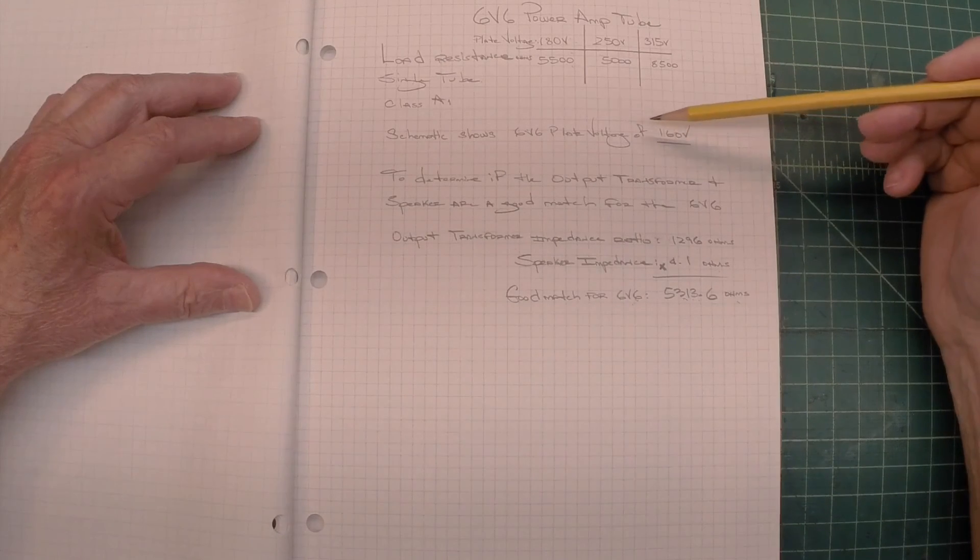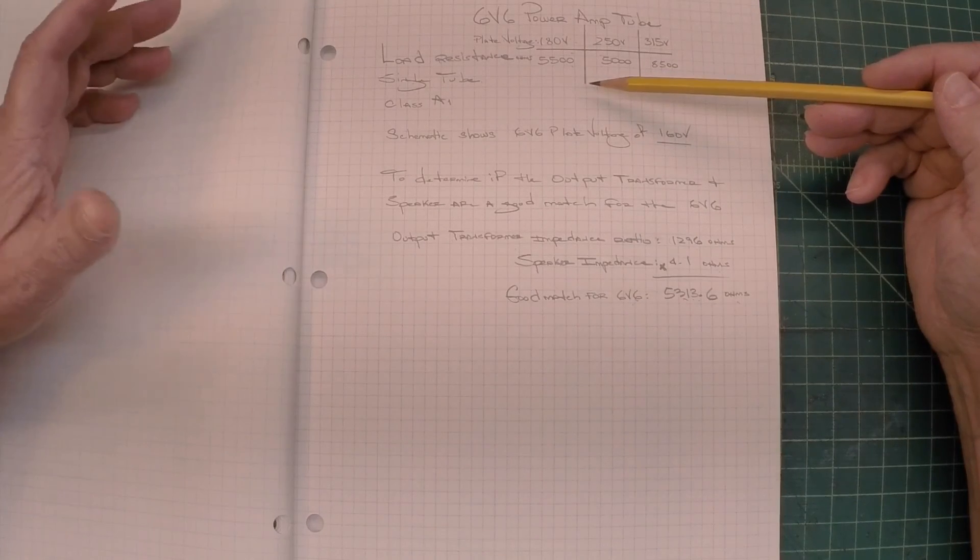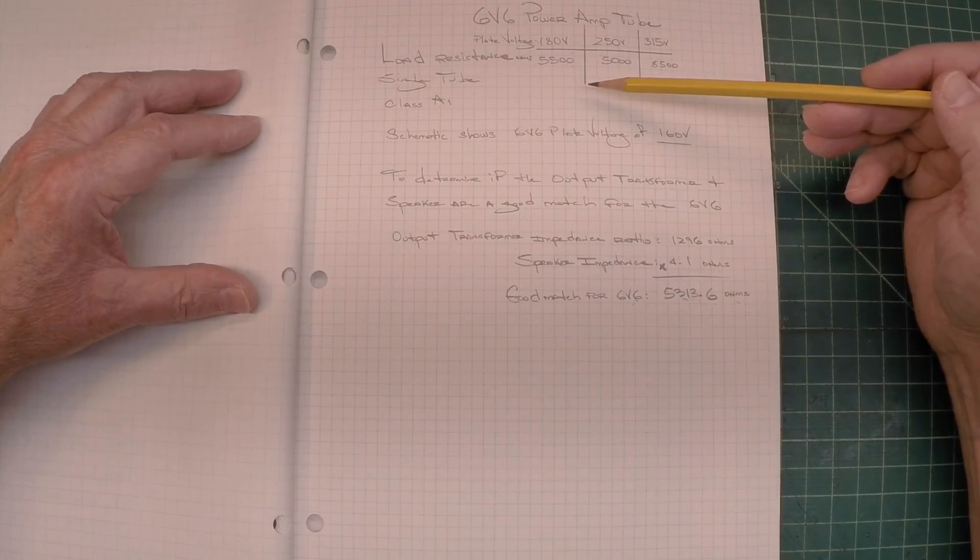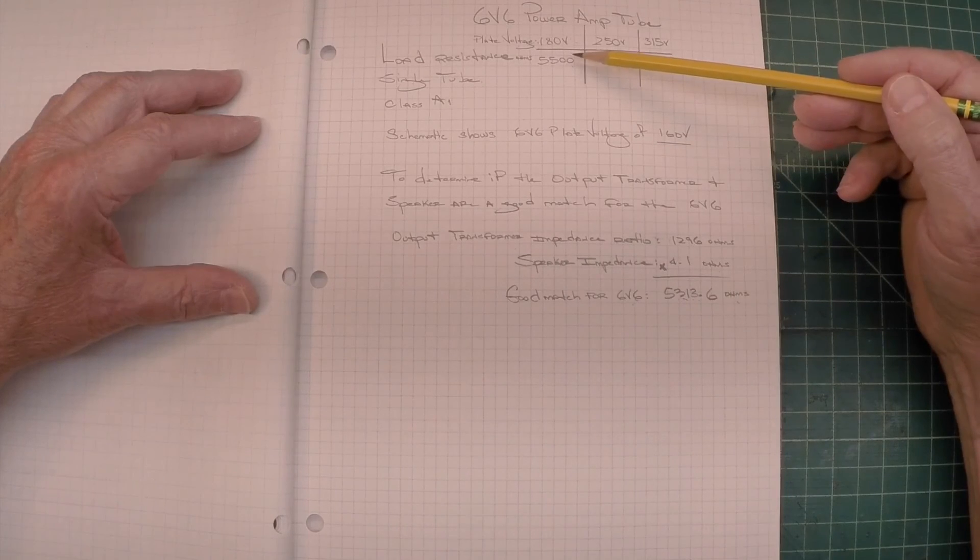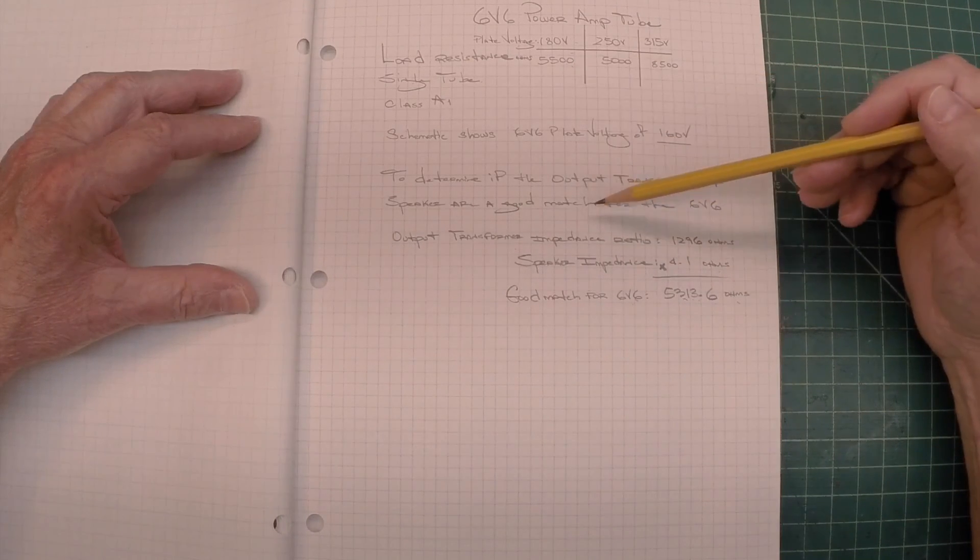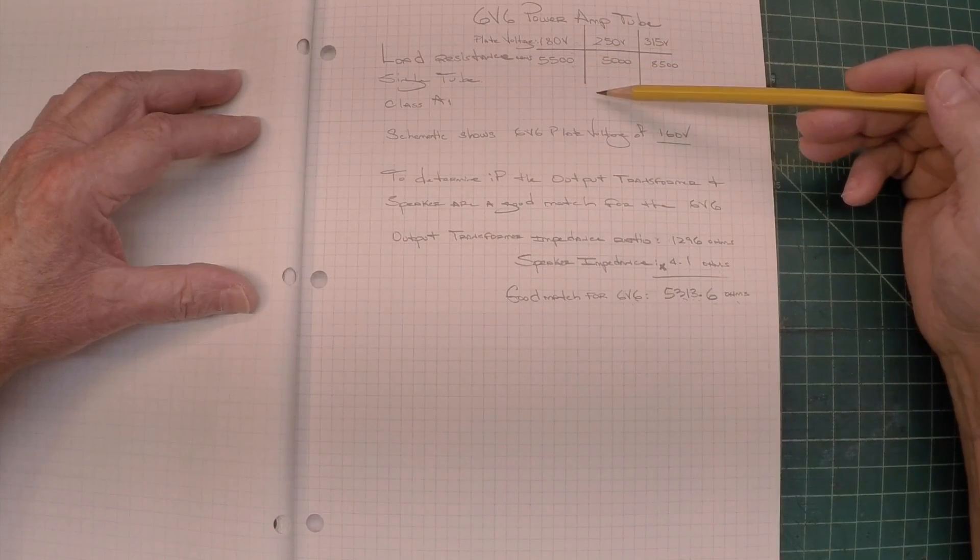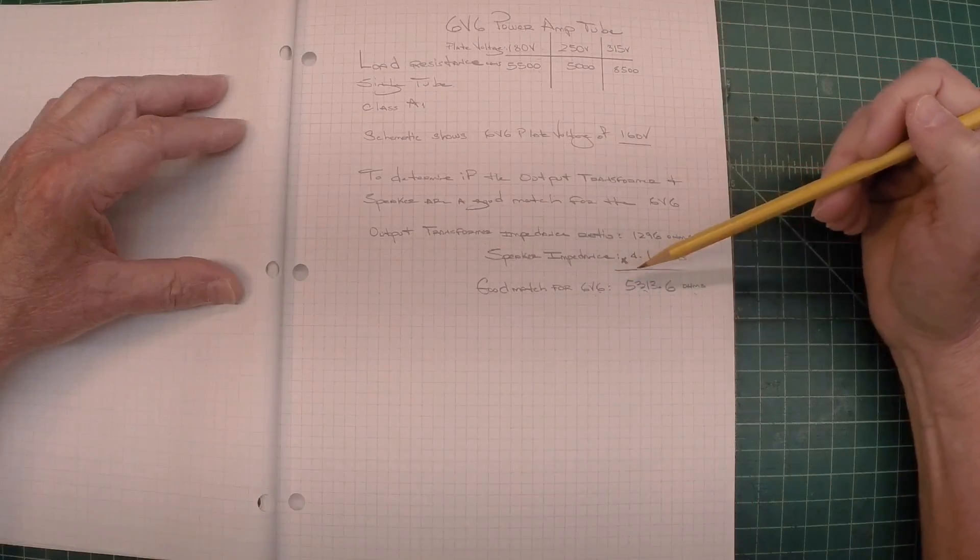So whoever chose the PM speaker using a 4-ohm replacement, and again I'm assuming it's the original output transformer, looks like I'm set. And this radio should play well using the little small PM speaker that's there with the output transformer.